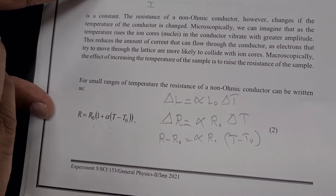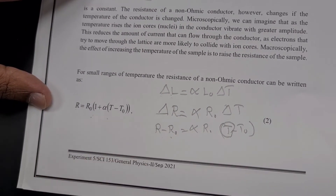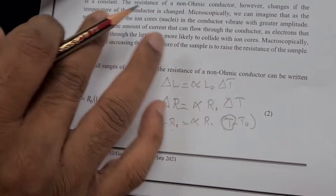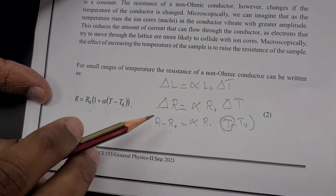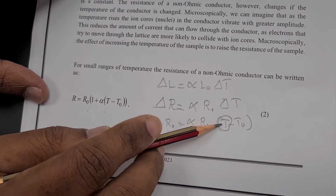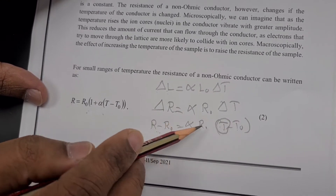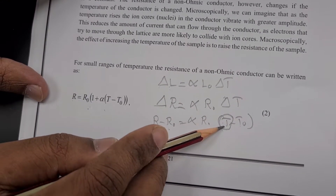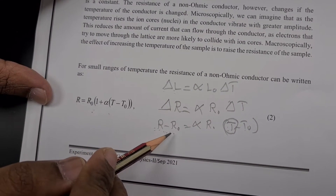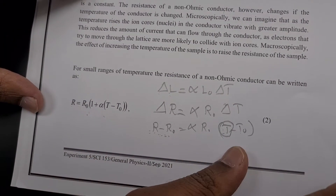What is our objective? By using this equation, we are going to find the value of this temperature. You have to rearrange it — I will tell you how to rearrange. The room temperature T₀ will be given by your teacher. By using this, you have to find the final temperature. The R and R₀ values you have to get from the graph. The graph is a little bit different, which I will explain after the table.